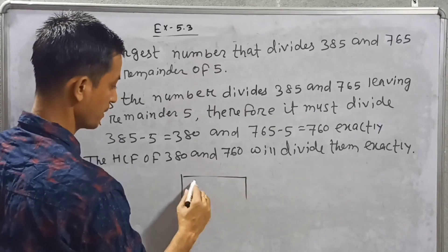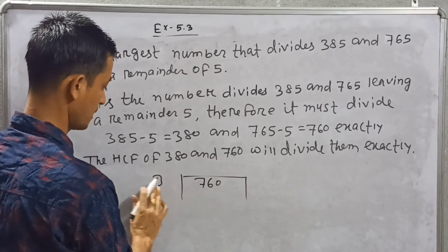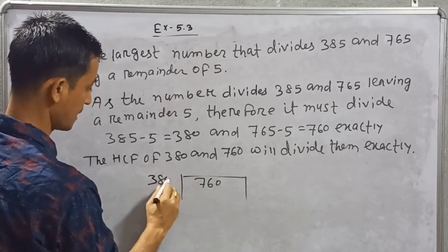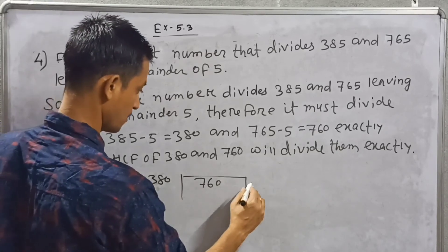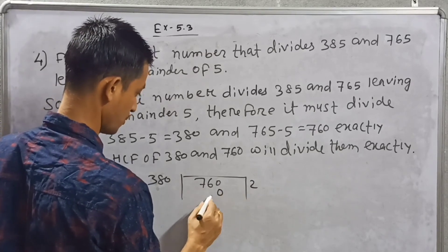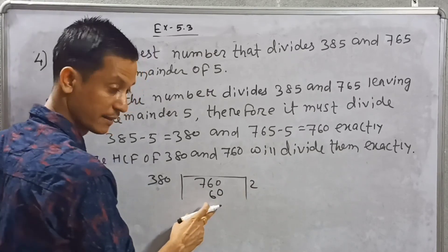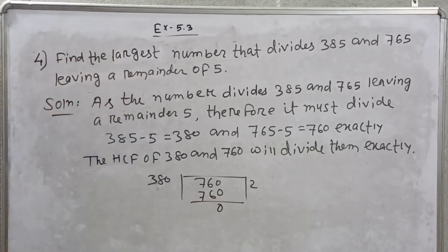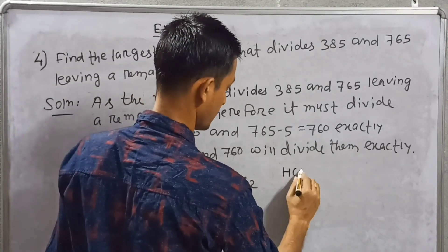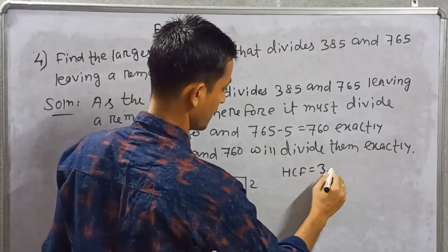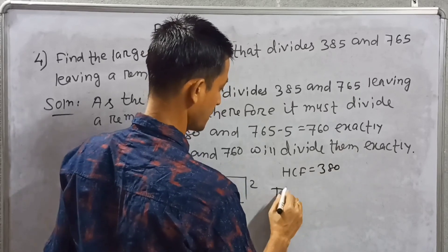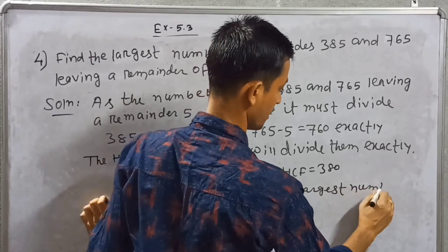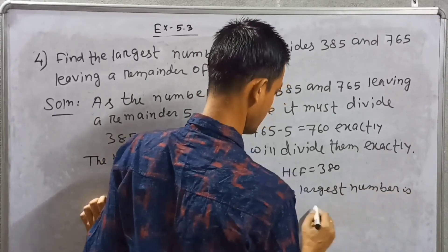Apply the division method. 760 as dividend, 380 as divisor. 380 goes 2 times exactly into 760, remainder is 0. Therefore HCF = 380. The largest number is 380.